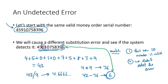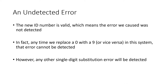We don't always know the original number. We have to put ourselves in the shoes of the person on the other side of the customer service line — all they know is what they're being given. If all we're given is this new ID number, we have no way of knowing something's wrong with it. The new ID number is valid, which means the error we caused was not detected. With this system for postal service money orders, any time we replace a zero with a nine or vice versa, that error is not going to be detectable. But the good news is that any other single-digit substitution error will be detected.